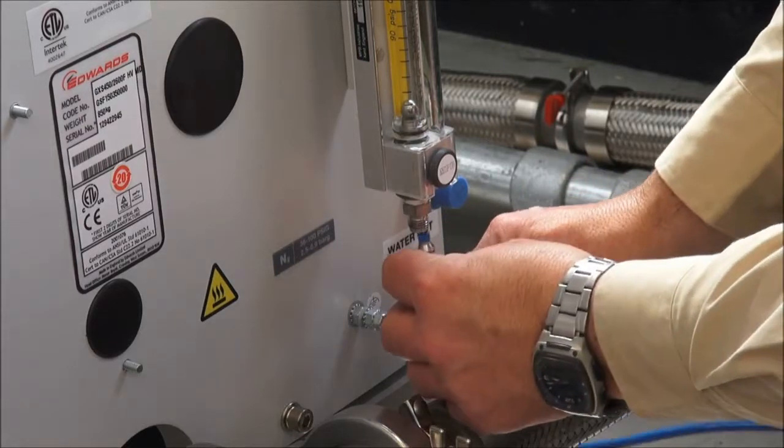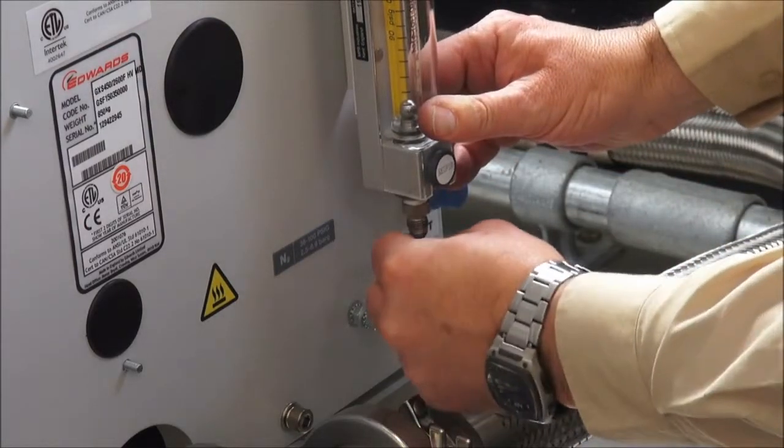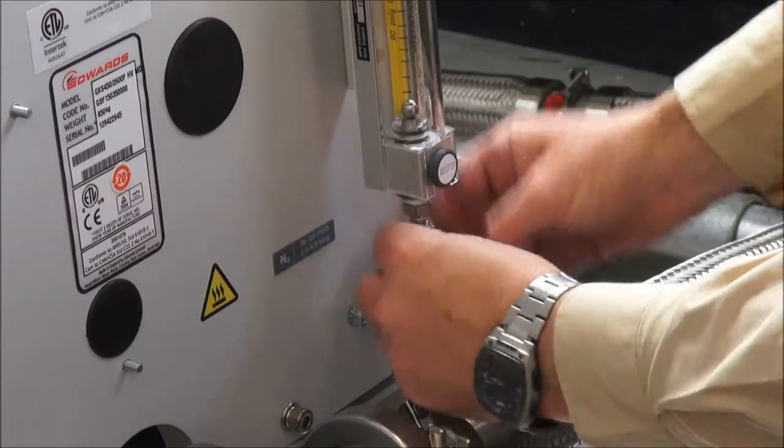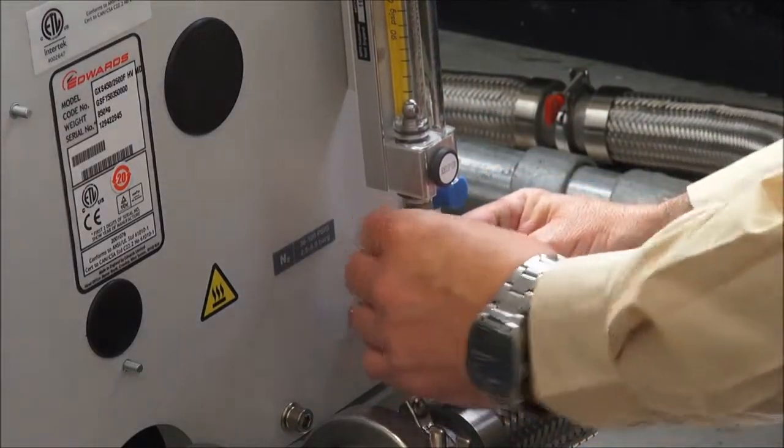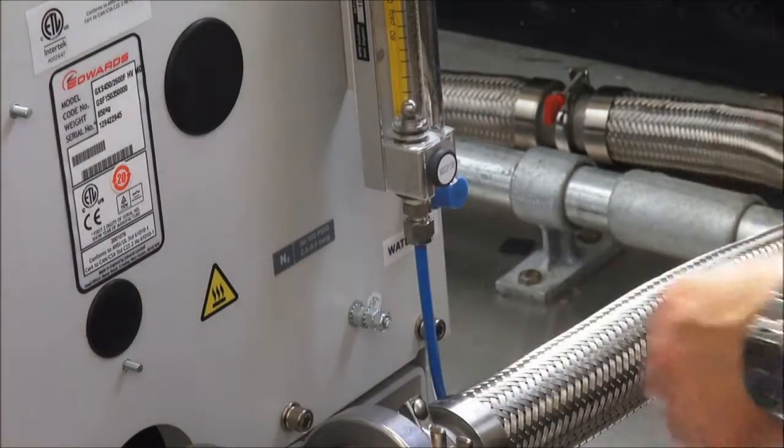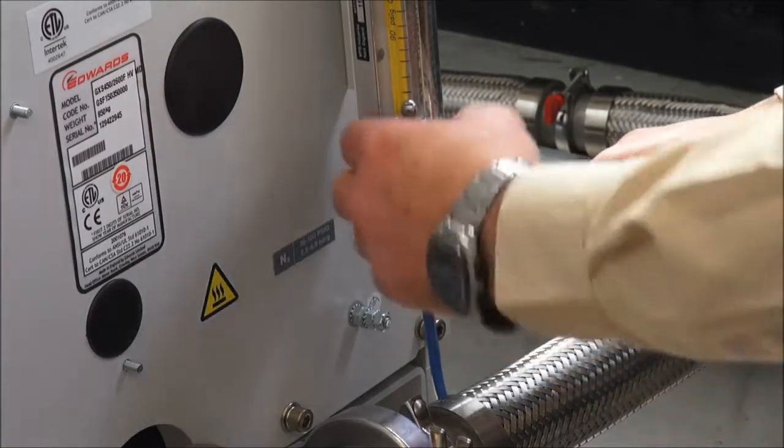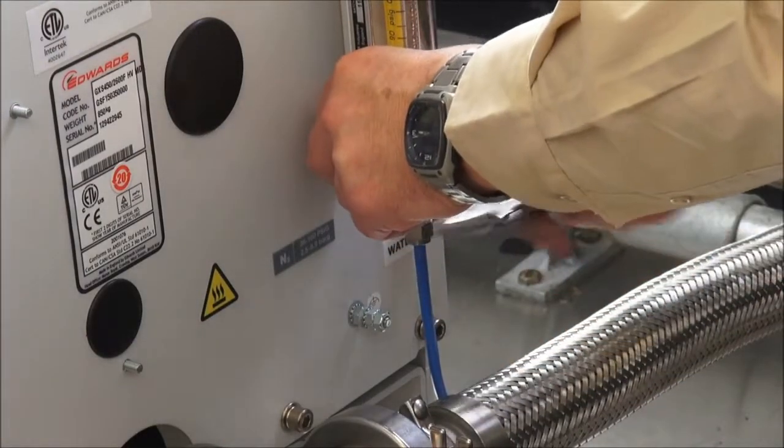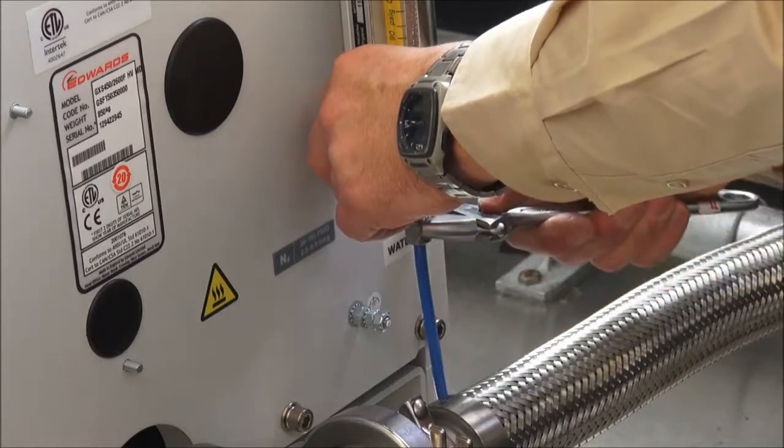Attach your gas supply. This would normally be dry nitrogen, but clean dry compressed air can also be used if appropriate for the application. The gas pressure specification is clearly marked on the label next to the rotameter connection. Tighten the connection properly.